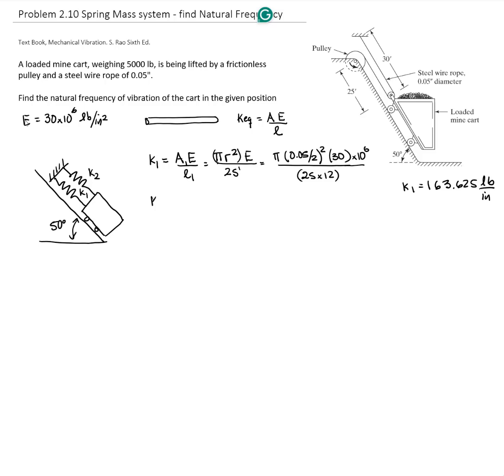For K2, very similarly, we have π r² times 30×10⁶. Here the length is 30 feet, which converts to inches: (0.05/2)² times π times 30×10⁶ divided by 30 times 12 inches.